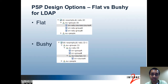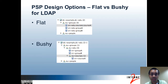With a flat structure, all of the Grouper groups live directly under one OU, and the CN of each group is the full name or ID path of the group. With a bushy structure, which is the default, each folder in Grouper is represented as an OU in LDAP. The default value of the OU is the extension or ID of the folder, so this isn't the full path. Folders within folders in Grouper are represented as OUs within OUs, and groups in Grouper are represented under the appropriate OU in LDAP. The CN of the group is the extension or ID of the group rather than the full ID path.